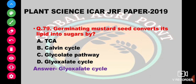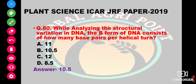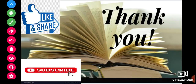Germinating mustard seed converts its lipid into sugar by TCA cycle, Calvin cycle, glycolate pathway, or glyoxylate pathway. The answer is glyoxylate pathway. While analyzing structural variation in DNA, the B-form of DNA consists of how many base pairs per turn? The options are 11, 10.5, 12, or 8.5. The answer is 10.5.